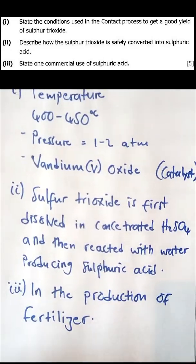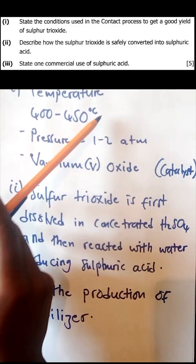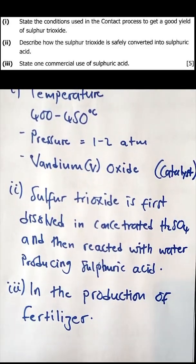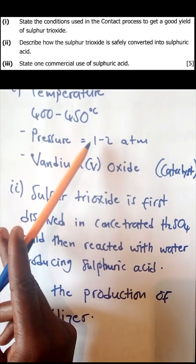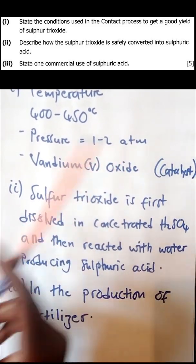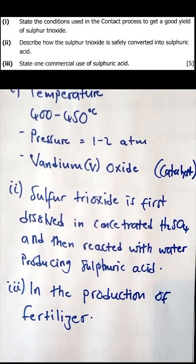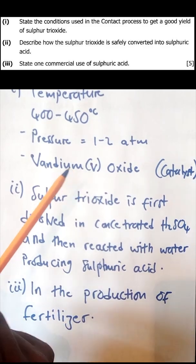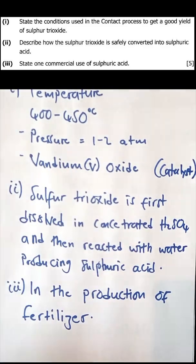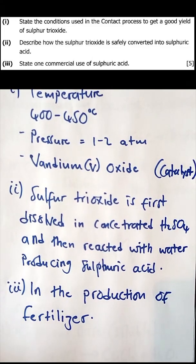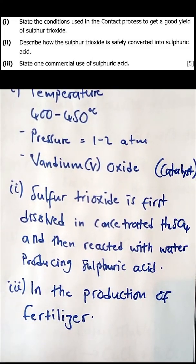Condition number two is a pressure ranging from one to two atmospheric pressure. Condition number three is a catalyst — not just any catalyst, but specifically vanadium pentoxide (V₂O₅). Once you meet these three conditions, you can successfully yield a large amount of sulfur trioxide using the contact process.